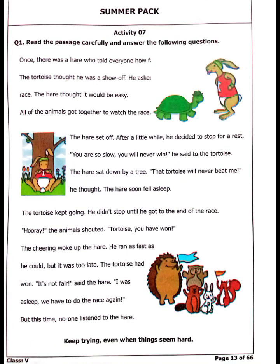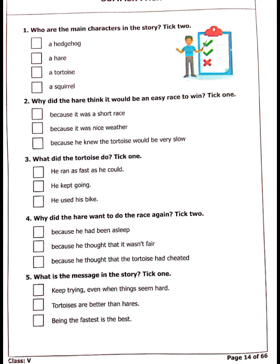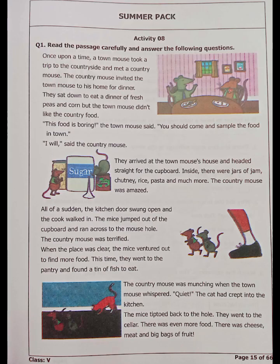Activity 7 is again a comprehension. Read the passage carefully and answer the following questions. You have to read the paragraph first and answer the questions given on the next page. Now, Activity 8 — read the following passage and answer the following questions. You again have to read this paragraph carefully and answer the questions given on the next page.